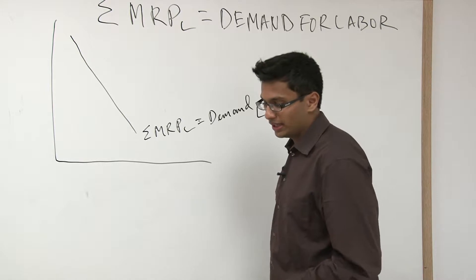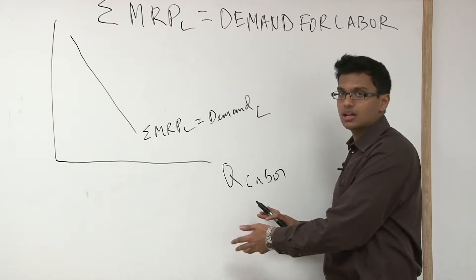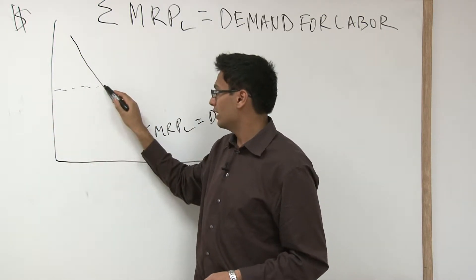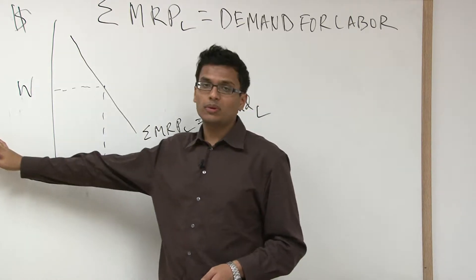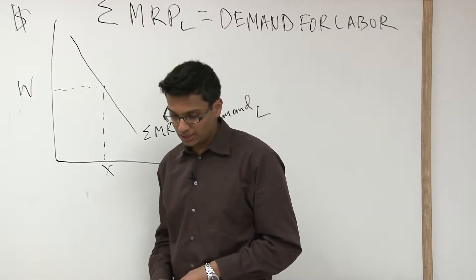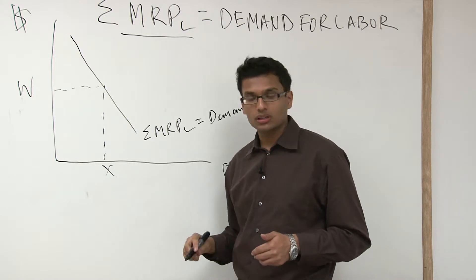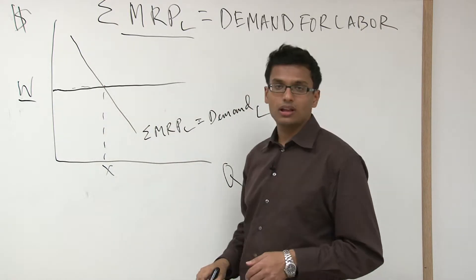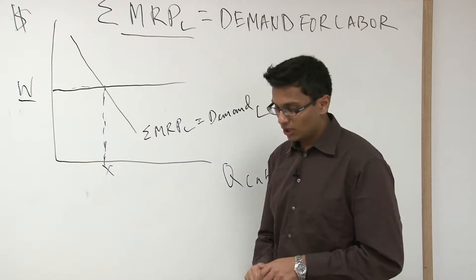So at a given wage, you hire a certain number of workers — for example, hiring X workers at a given wage. In a competitive market, MRPL forms the demand for labor and the wage forms supply as a horizontal line. Where those two meet is your equilibrium. This graph might show up on an AP test, so spend time understanding MRPL in depth.